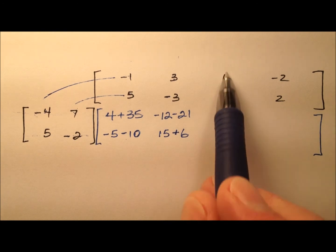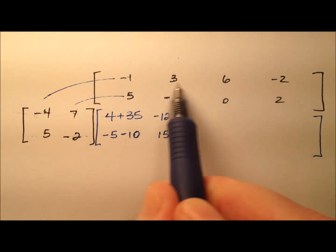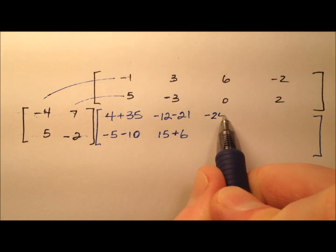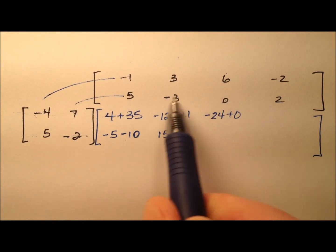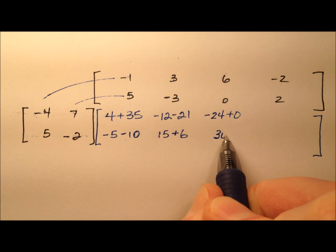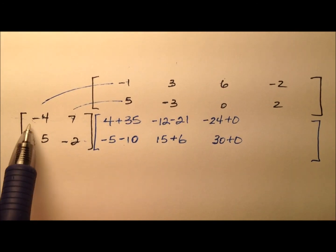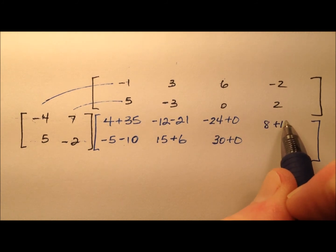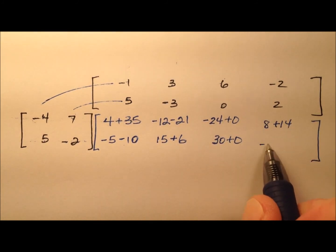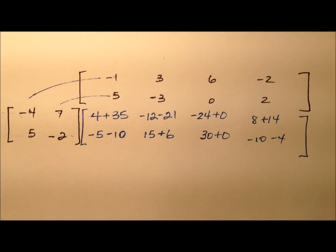And so let's just go ahead and finish up column 3 and column 4. So it'll be, looks like negative 24 plus 0, because we have multiplication by 0. And then 5 times 6 is 30, and then once again plus 0. And then finally, the row in this last column, so it looks like 8 plus 14, and finally negative 10 minus 4. So that's just the work there.